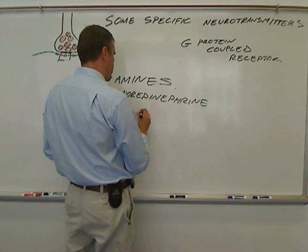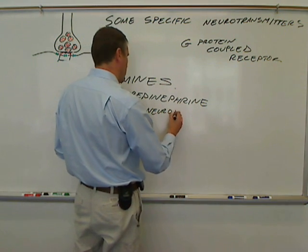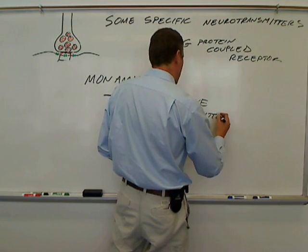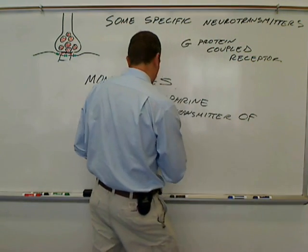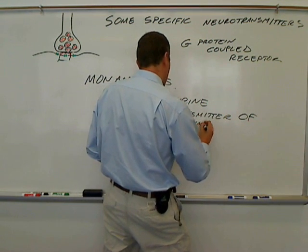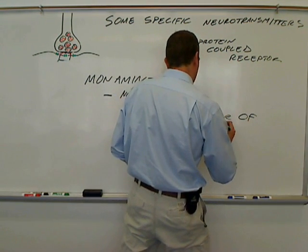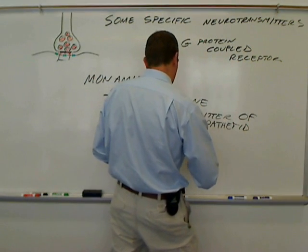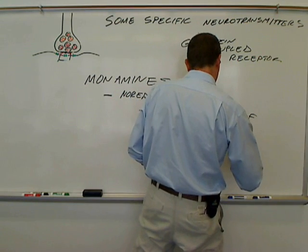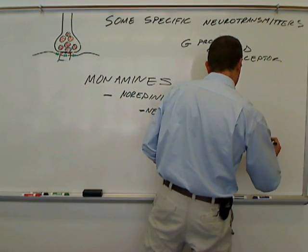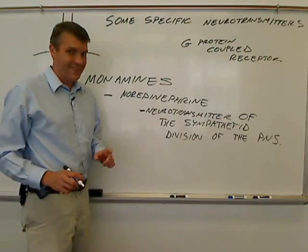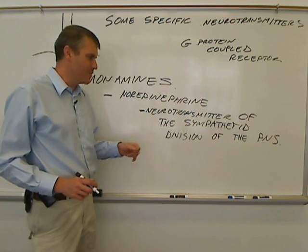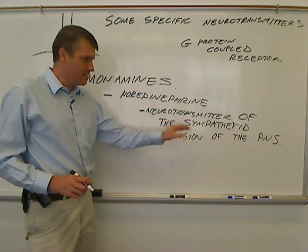Norepinephrine you could think of as the neurotransmitter, and epinephrine as the hormone version of the sympathetic division. There are two different major divisions to the peripheral nervous system: the parasympathetic division and the sympathetic division.